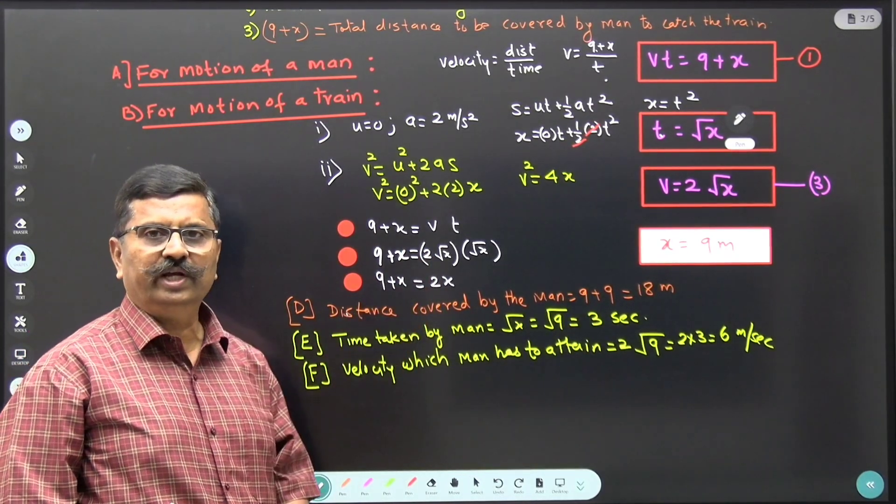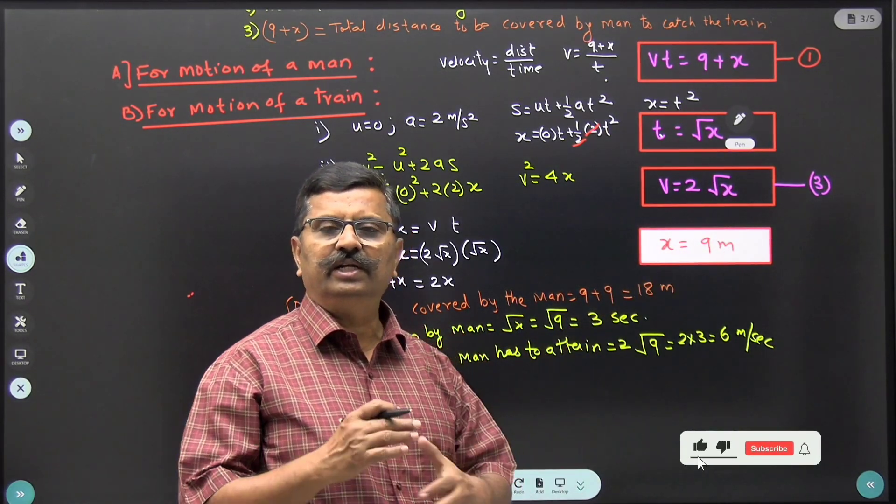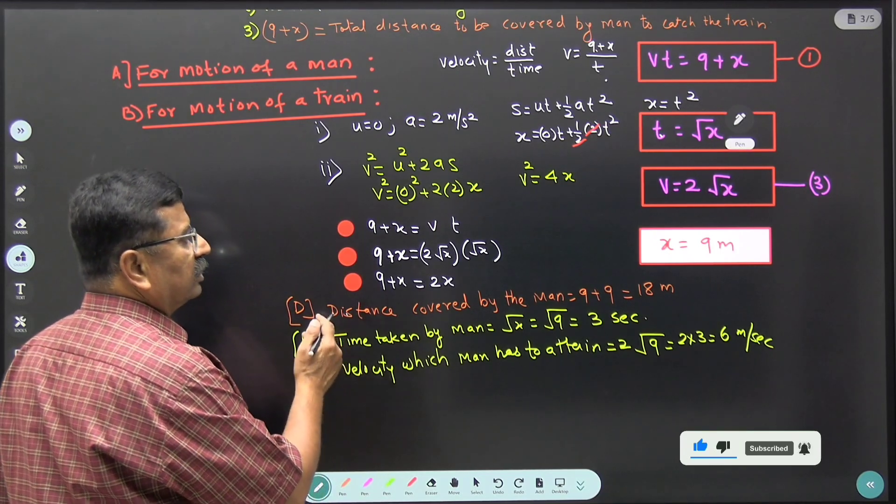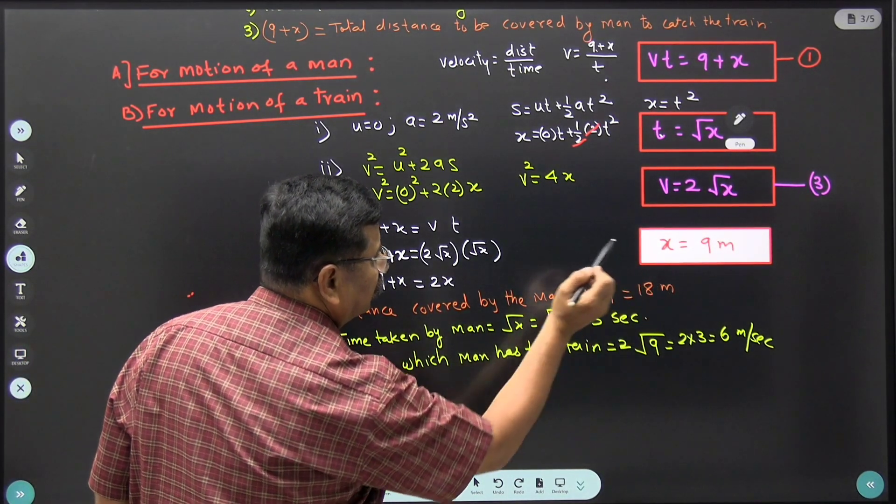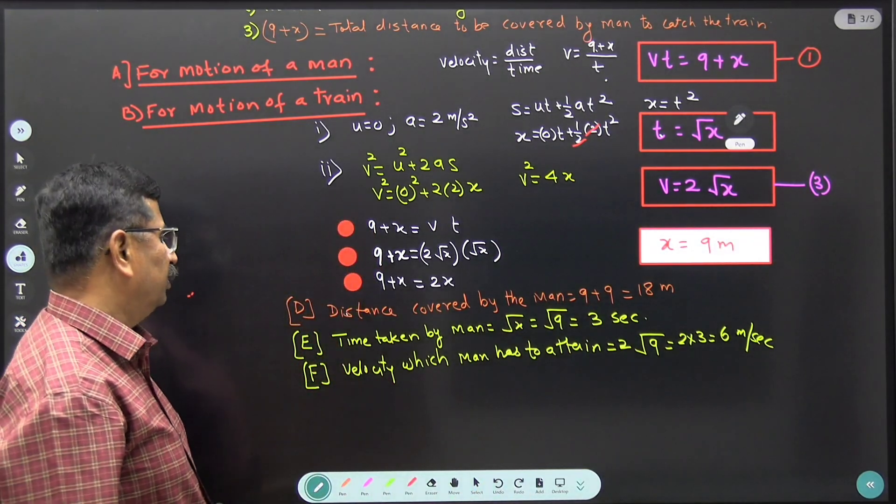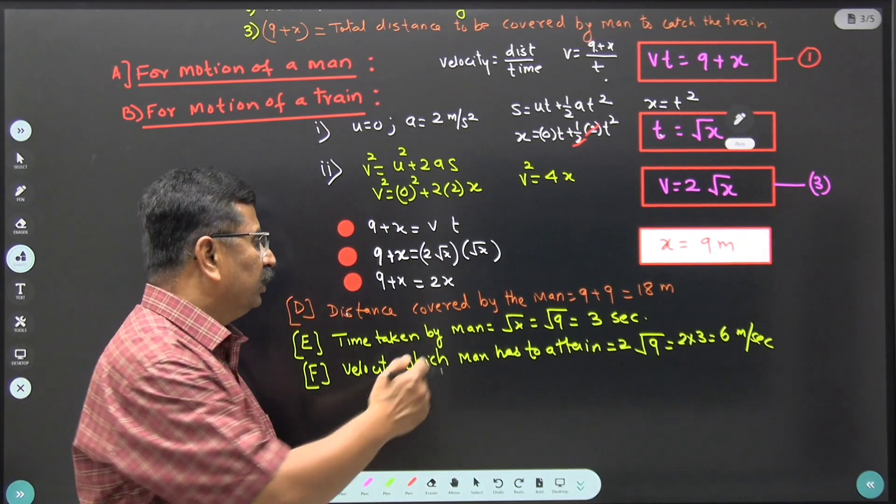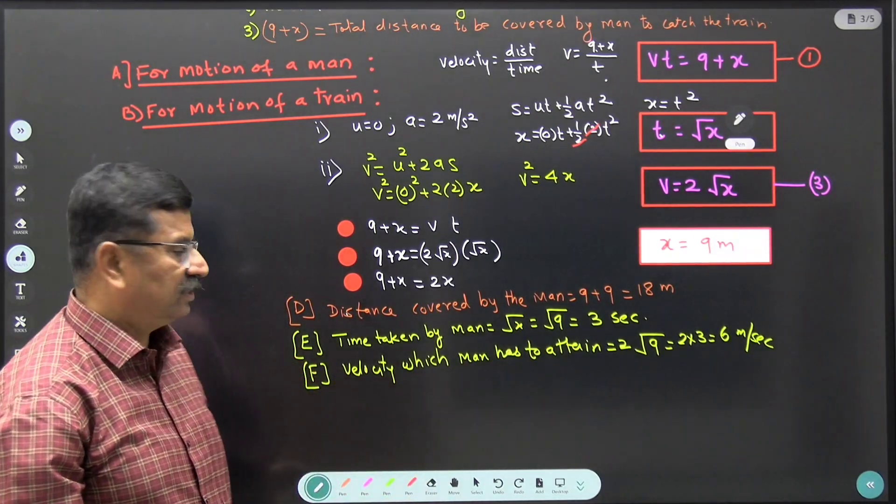And x found to be 9 meter means in t seconds train cover 9 meter distance. Therefore, distance covered by the man is 9 plus x that is 9 plus 9 is equal to 18 meter. Then what is the time taken by the man to catch up the train? That is root x. Then x is equal to 9, root 9 that is 3 seconds.